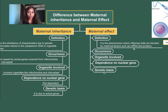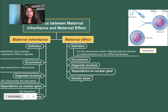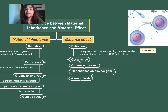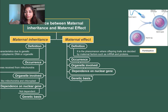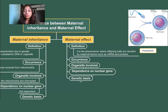Maternal effect is the phenomenon where offspring traits are decided by maternal factors such as mRNA and protein. When the zygote receives the cytoplasm, along with the organelles it also receives mRNAs and proteins synthesized in the egg. If there is any character in the zygote decided during the preliminary stages where the zygote's genome has not yet expressed, not yet transcribed or translated, then it will be taken care of by the mRNA and protein inherited through the egg's cytoplasm.